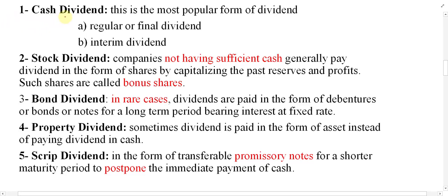Cash dividend can be a regular or final dividend, and also an interim dividend. If a dividend is declared at the end of the year, this is called a regular or final dividend. If a dividend is declared during the accounting period — that is, between two annual general meetings — this is called an interim dividend.